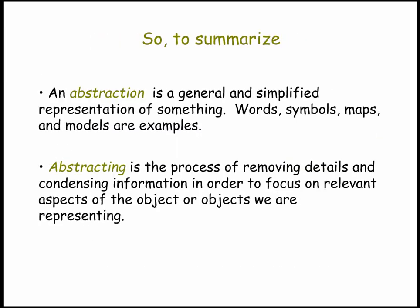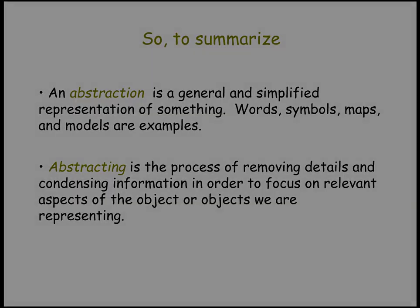To summarize: an abstraction is a general and simplified representation of something. Words, symbols, maps, and models are all examples. And abstracting is the process of removing details — or including only those details that are necessary — in order to use the abstraction for some purpose.